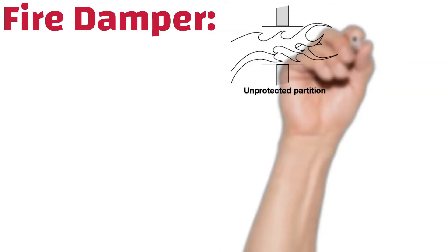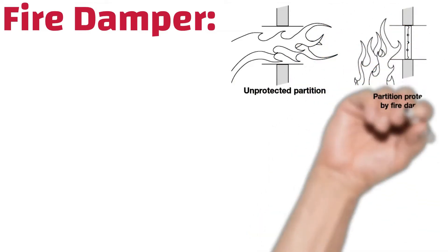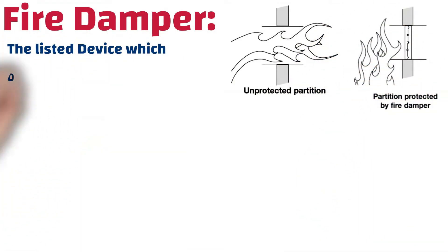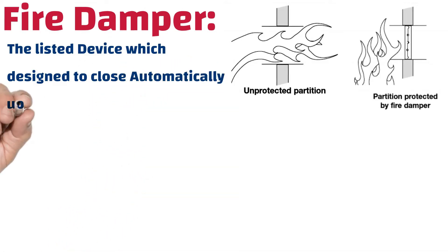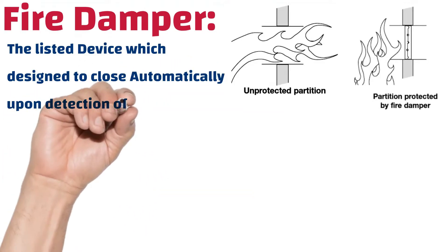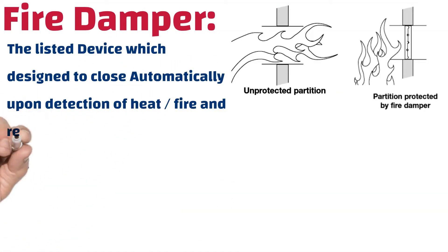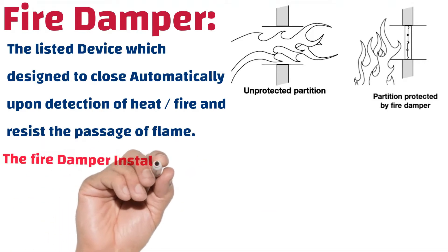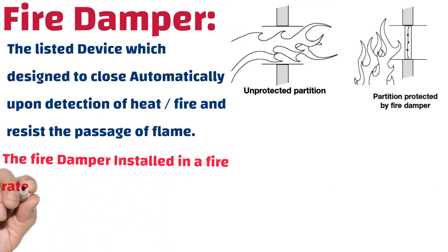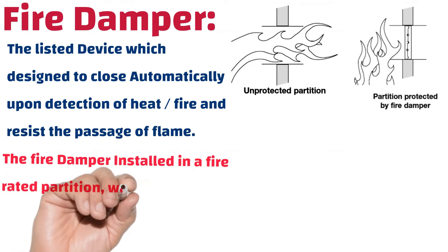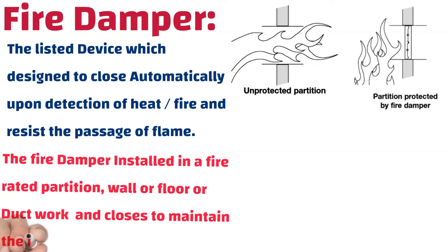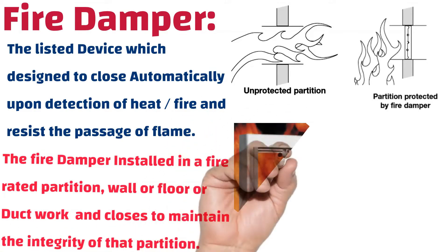First, we see about what is a fire damper. It is a listed device designed to close automatically upon detection of heat or fire and resist the passage of flame. The fire damper is installed in a fire-rated partition wall, floor, or ductwork and closes to maintain the integrity of that partition.